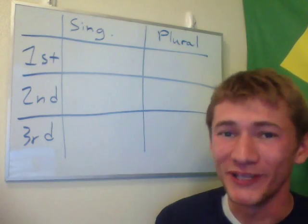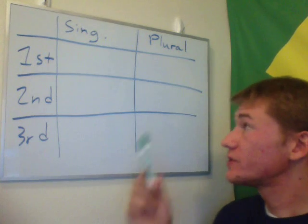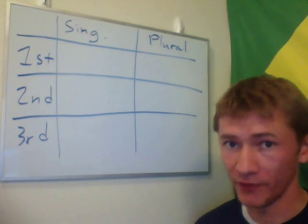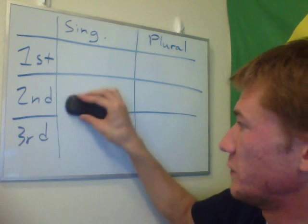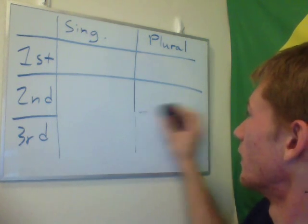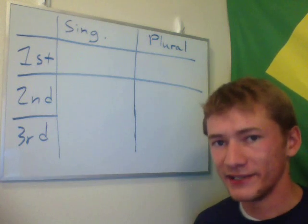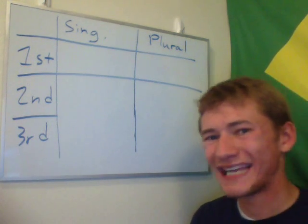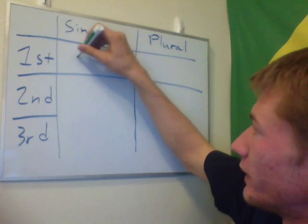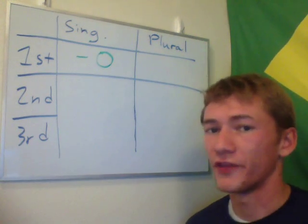Hi camera two, which is really camera one just zoomed in. Now when it comes to the IR endings, you're in luck because there's only four to remember, like the other ones. So we can just get rid of this line right here and we should be on our way. Now the IR endings are actually almost identical to the ER endings. So the top one here, if you remember, is U.